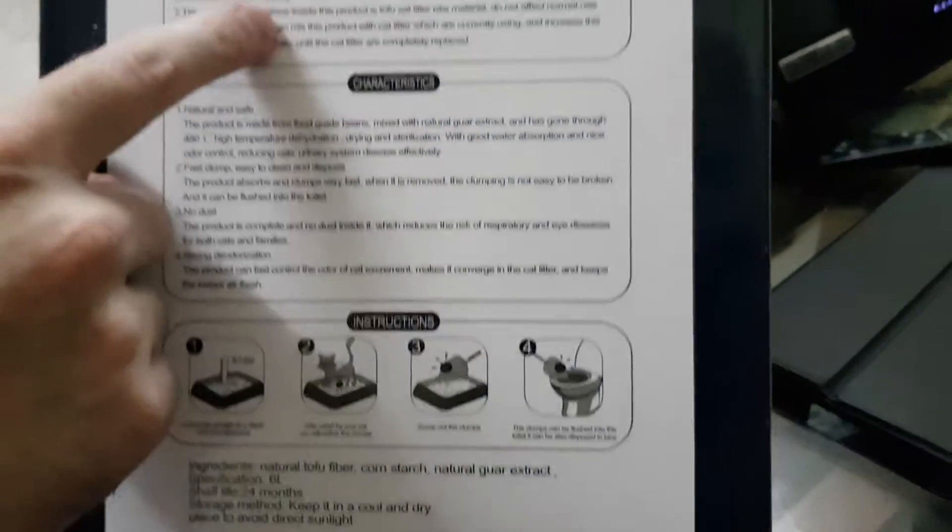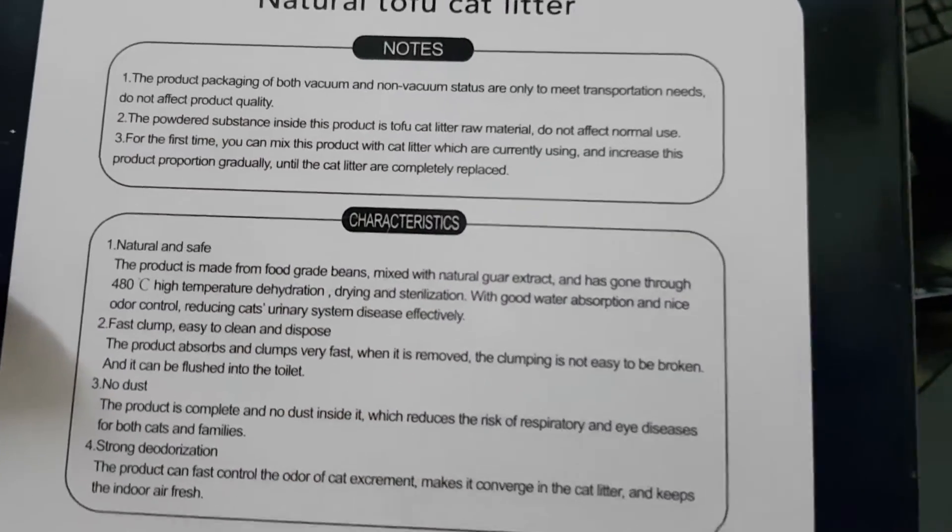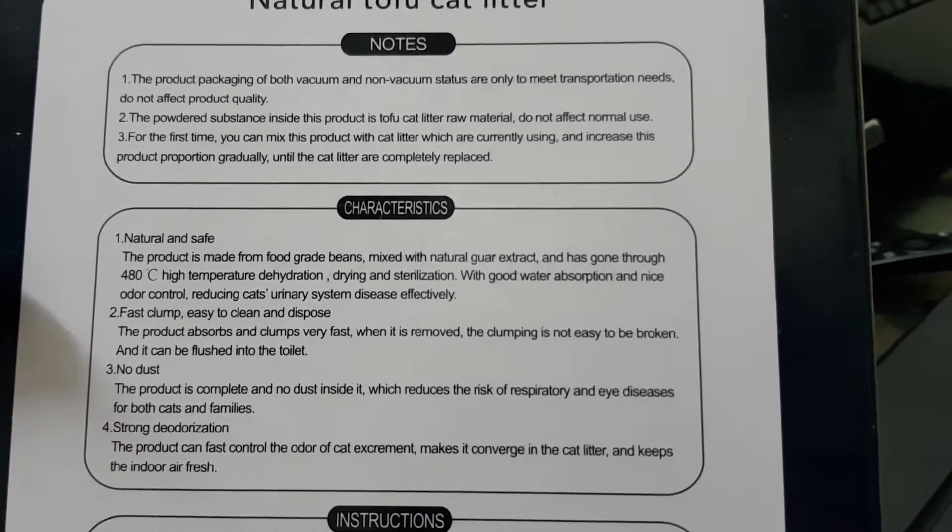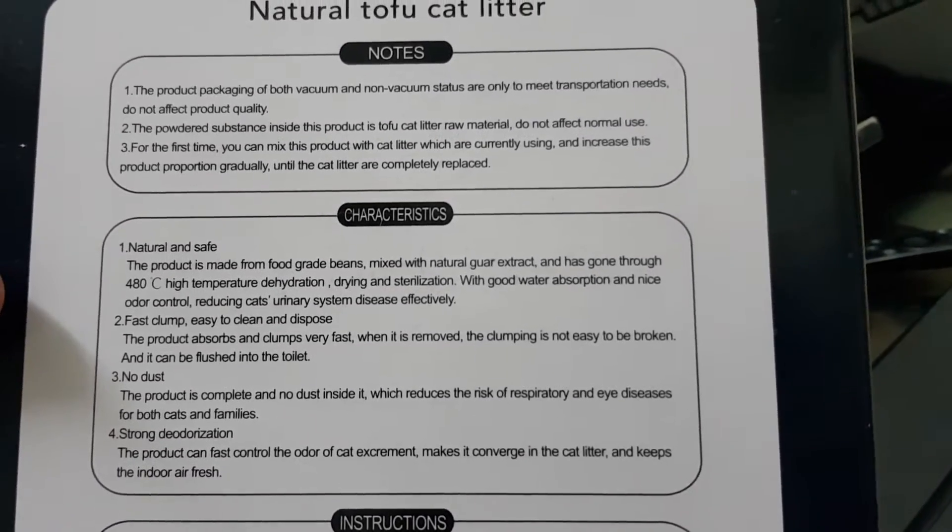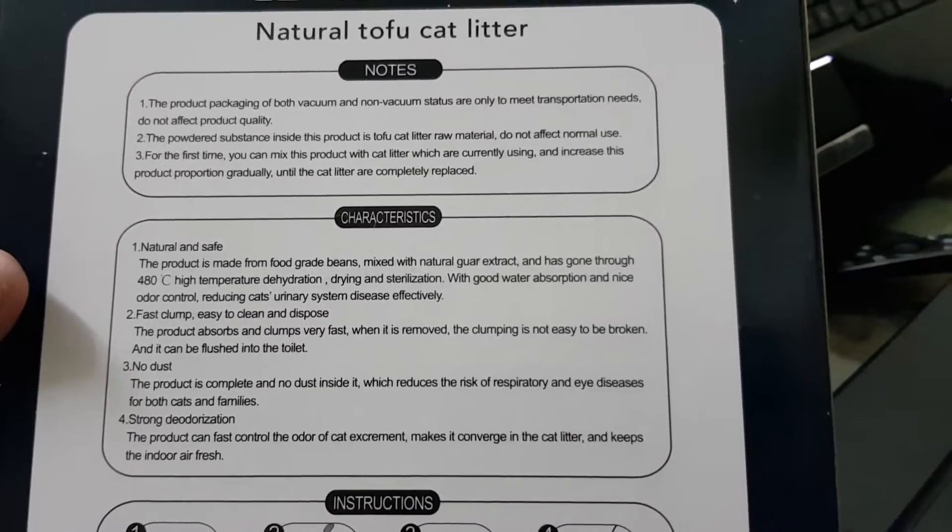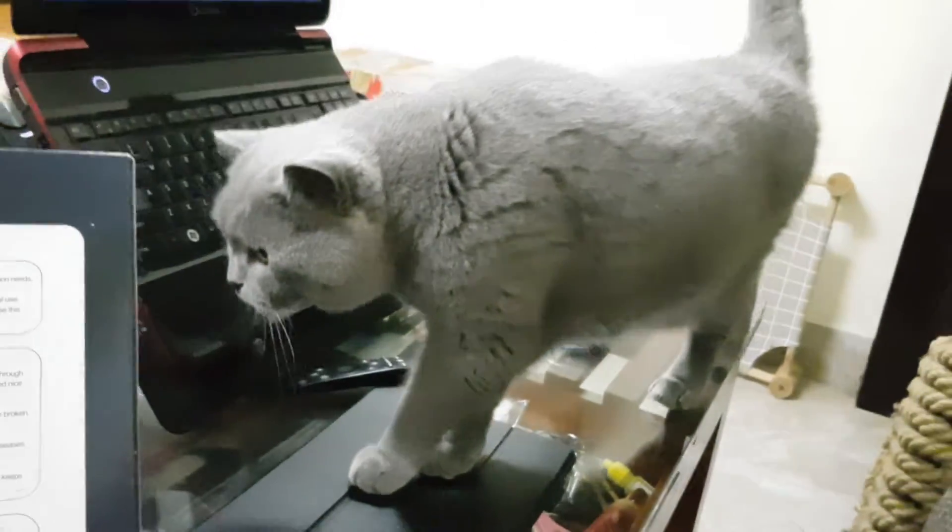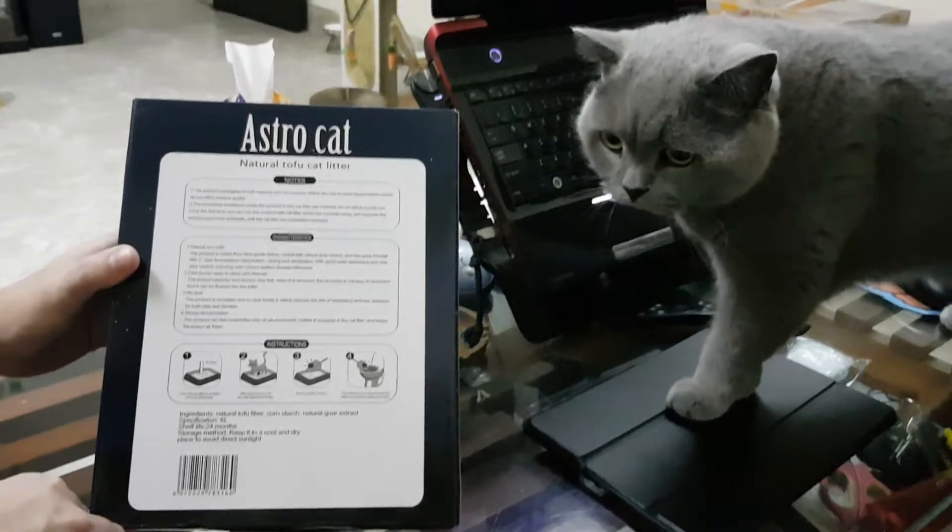And then here, get close here if they want to read. Product both vacuum and non-vacuum. This is the Astro Cat.